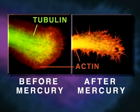Shown here is a neurite growth cone stained specifically for tubulin and actin, before and after mercury exposure. Note that the mercury has caused disintegration of tubulin microtubule structure.